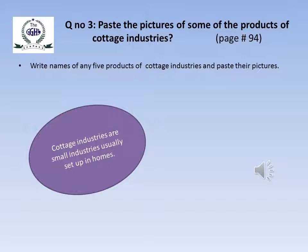Now question number 3: Paste the pictures of some of the products of cottage industries. Open your book page number 94 where cottage industries are given. Cottage industries are small industries usually set up in homes. Read the portion on cottage industries from your book and you can easily find the products of some of the cottage industries. Write the names of those products and paste the pictures.